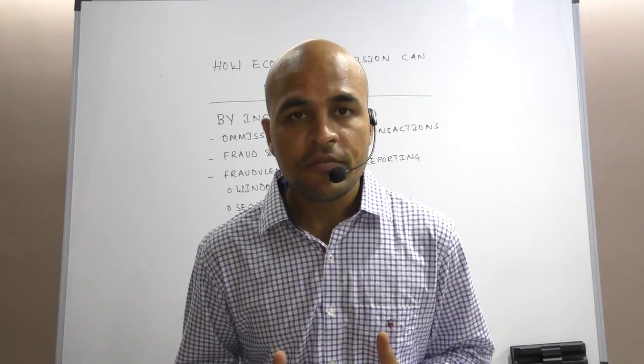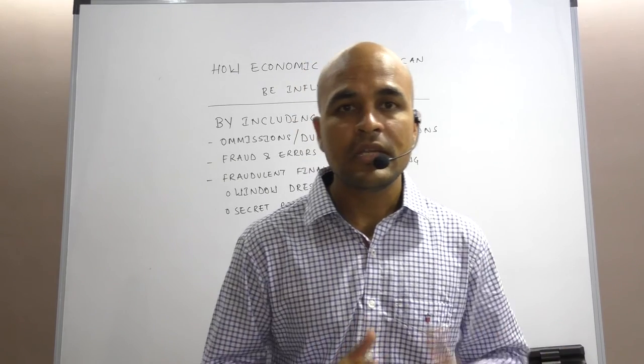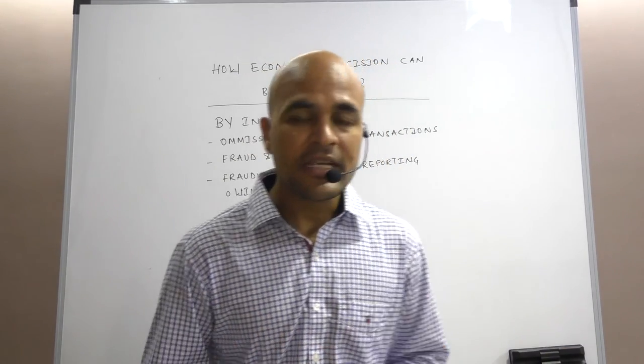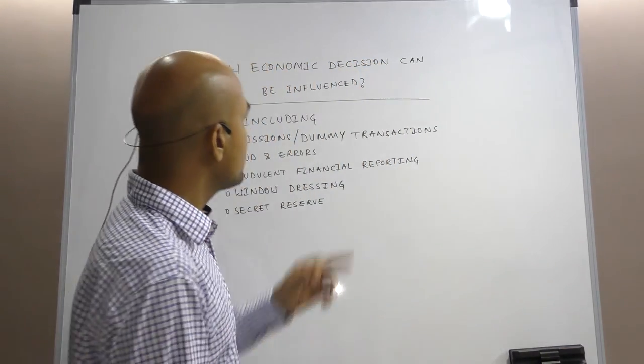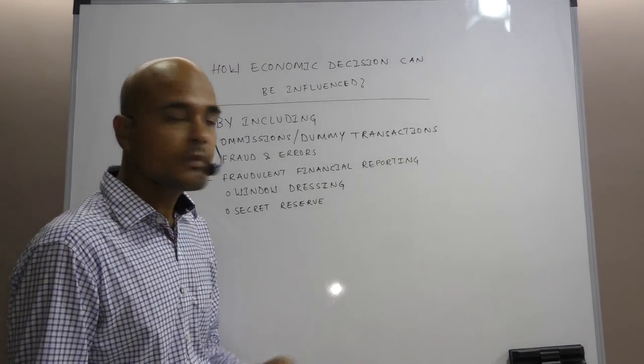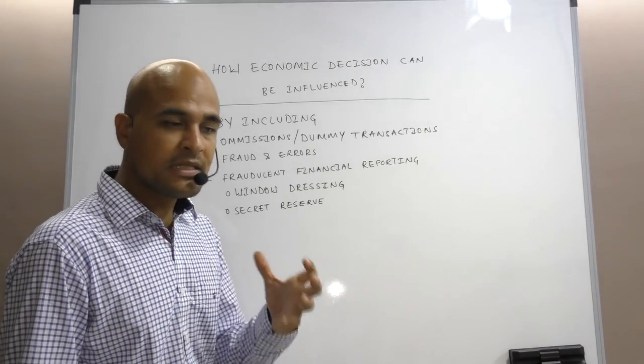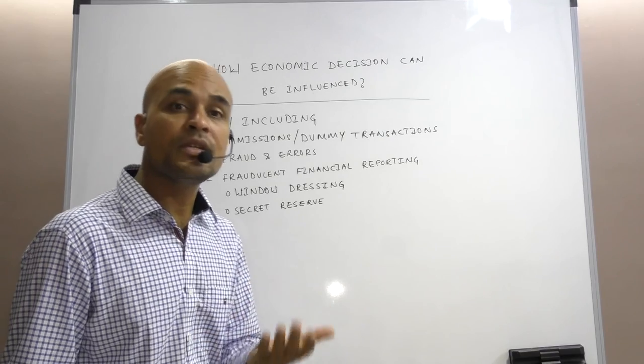Friends, now we will discuss how economic decisions of users can be influenced. It is very easy. We can influence economic decisions by including omissions or dummy transactions. That means in my financial statements there are many omissions.